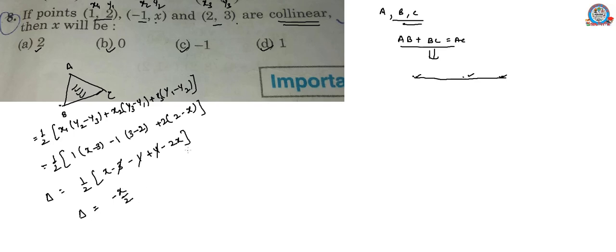As we know area can never be negative, so we can use area of this triangle as x by 2. But wait - points are collinear and collinear forms a straight line. If we draw a straight line, then area of this triangle should be 0.